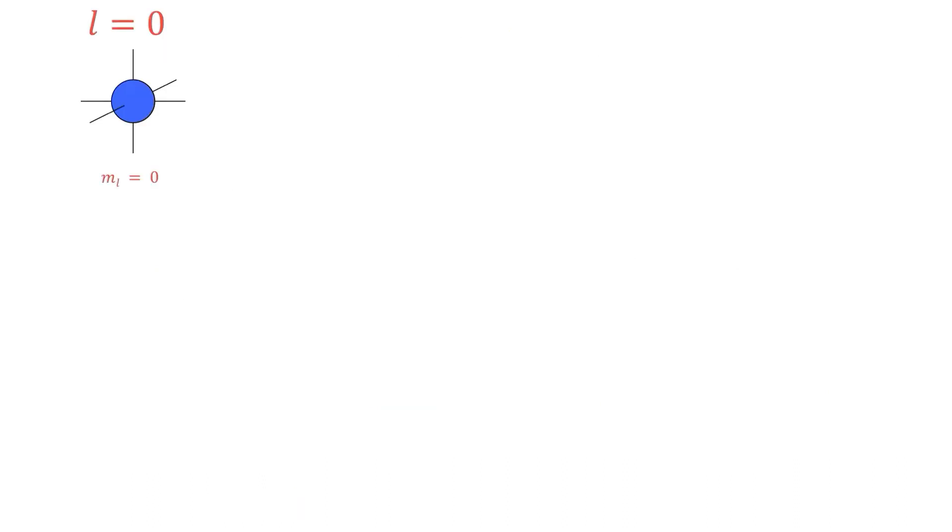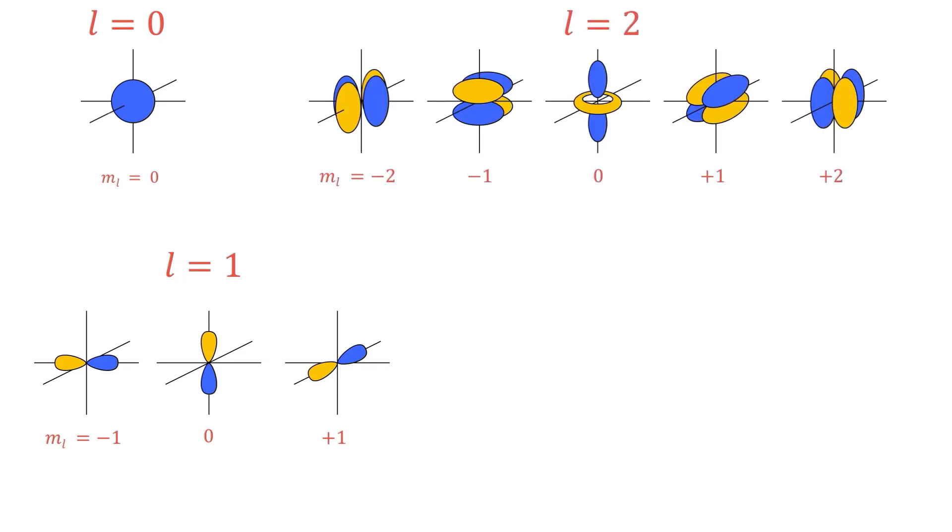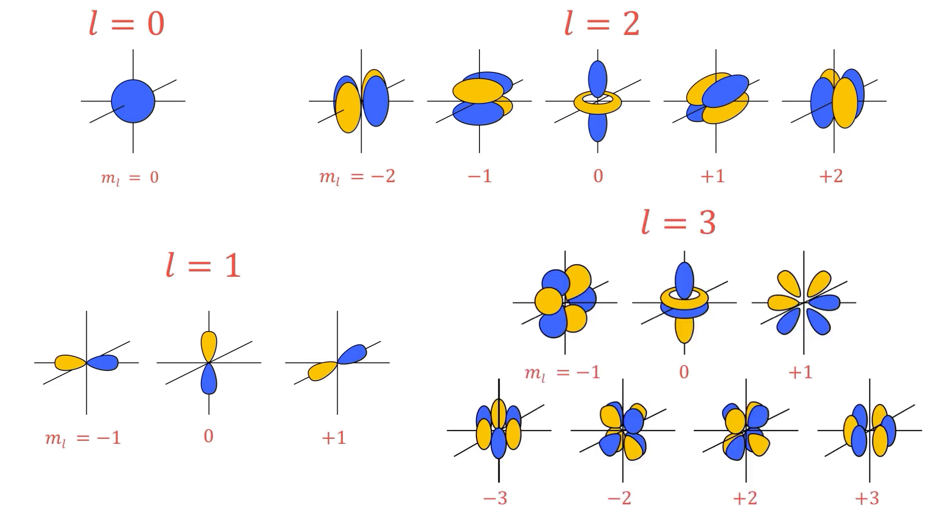When L is 0, ML is also 0, which means that there can only be one s orbital per energy level. When L is 1, there can be three values for ML, meaning that there will be three orbitals per energy level. For L is equal to 2, there are five values of ML, with five corresponding d orbitals. And for L is equal to 3, there will be seven f orbitals, or seven ML values.